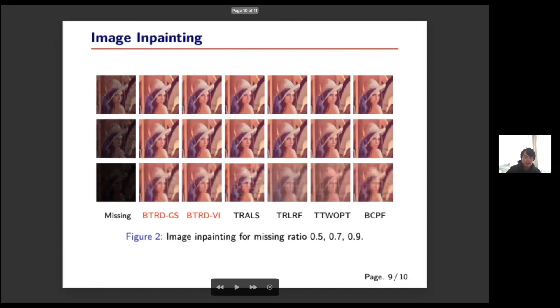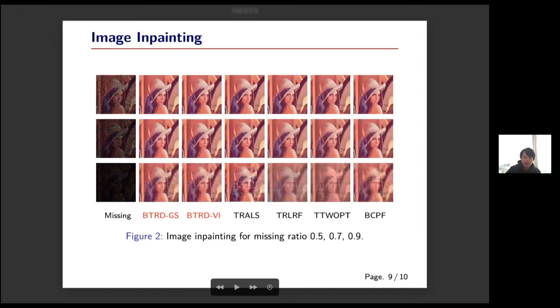Finally we apply our model to the image inpainting problem. It shows that our model outperforms the benchmark models in all cases, especially when the missing ratio is large. Moreover our model has no hyperparameters while most of the benchmark models have to tune the tensor ring ranks carefully to get better performance.